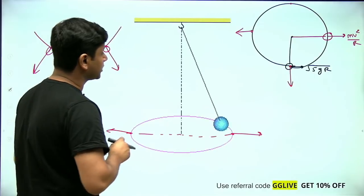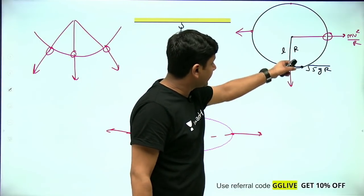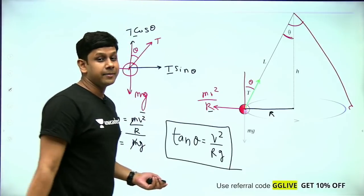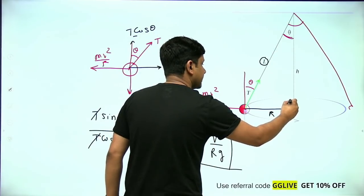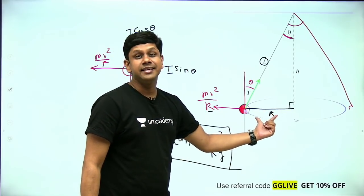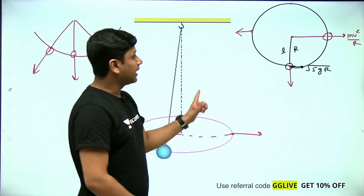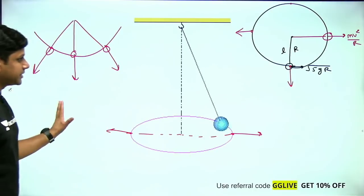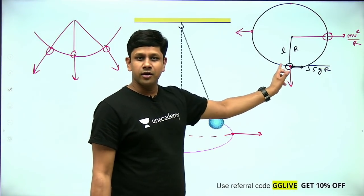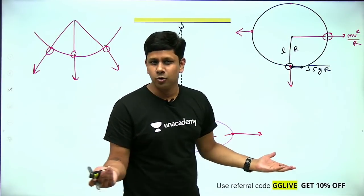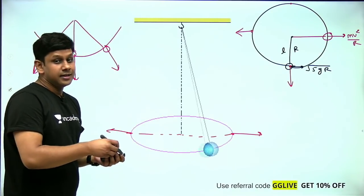I want to stress this point: in vertical circular motion the length of the string is the radius of the circle. But in a conical pendulum, the radius of the circle is not the string length — the radius is the horizontal distance, which is L sinθ.